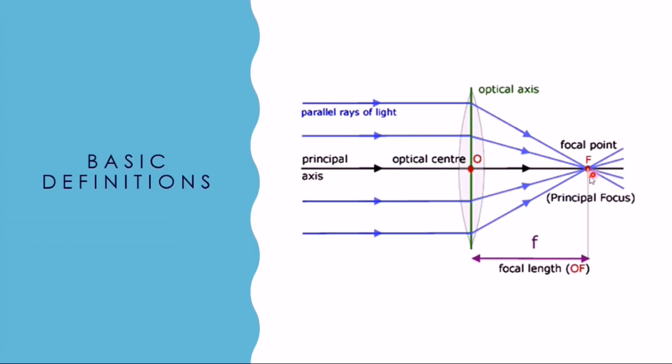The principal axis is the line passing through center of curvature of the lens. Focal length is the horizontal distance between principal focus and optical center. Optical center is an imaginary point inside a lens through which a light ray is able to travel without being deviated.